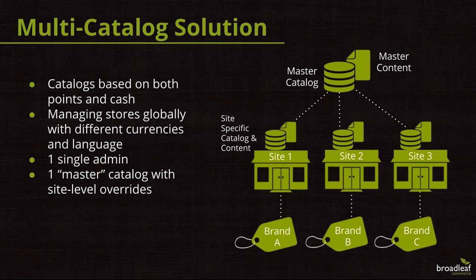Let's move on to our next solution: a multi-catalog solution. As depicted, you've got a master catalog that can be sent to different store sites — store.yourclientname.com. Each of those stores can be managed globally with different currencies and languages, with a single administrative interface on the back end. You've got a master catalog with the ability for site-level overrides, so if a client wants to add catalog components, change pricing, or update content, they can have that ability if you grant it.